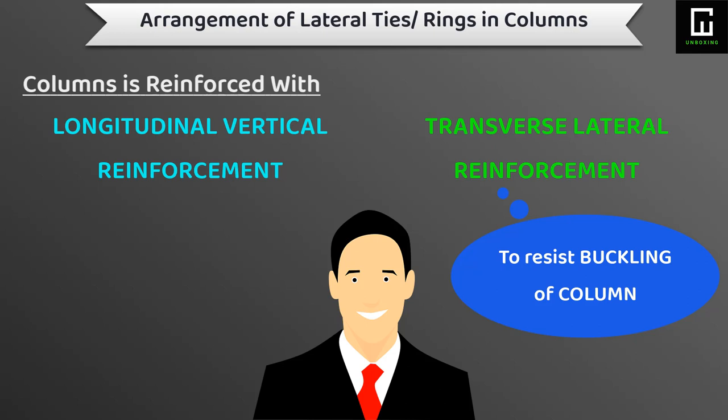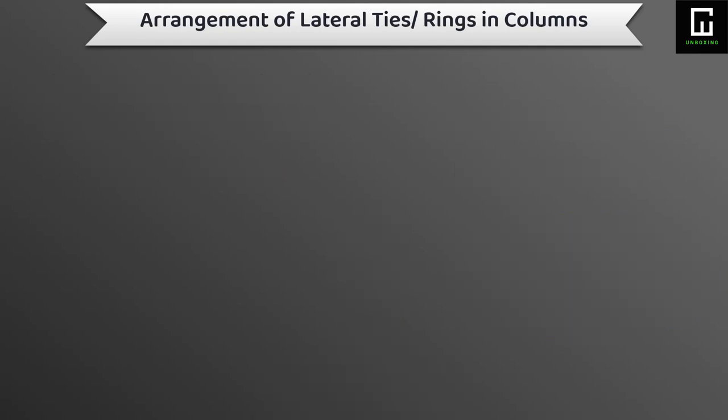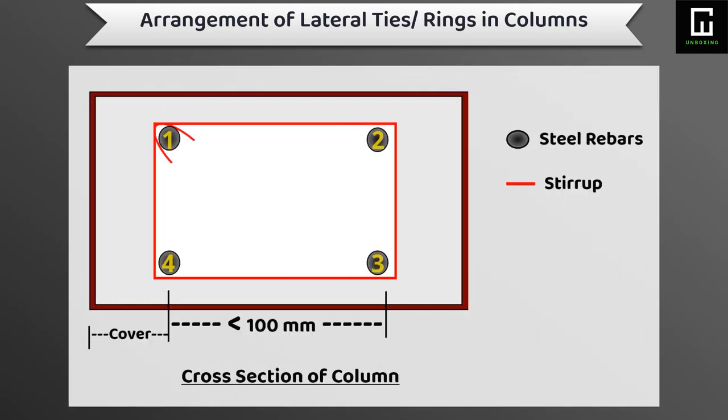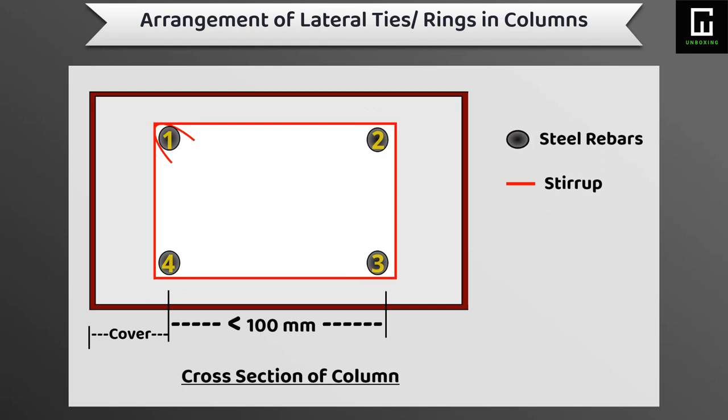Let's consider some different sizes of columns with various numbers of bars according to shape and size, and we will learn the concept of stirrup shapes or arrangement of stirrups. In the first picture, we can see a column with a cross-sectional size less than 100 mm by 100 mm, having four numbers of longitudinal bars at corners. In this type of structure, we can use only a single regular size of stirrup.